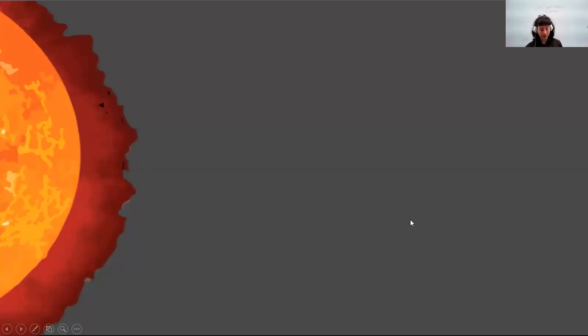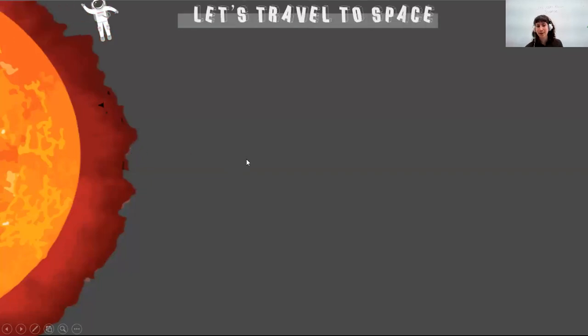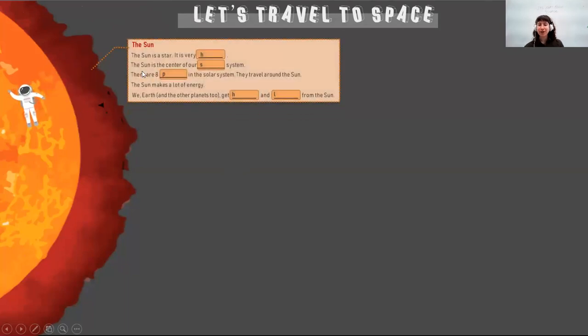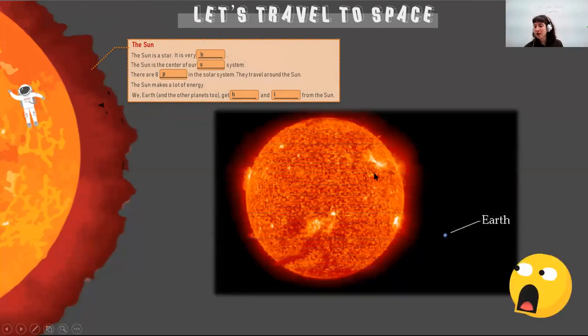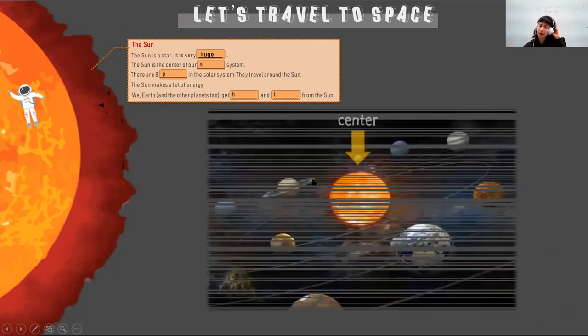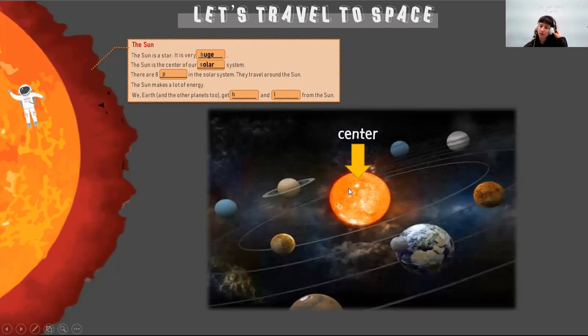We're done with the vocabulary part now, so we can follow along on our book page like this. So this big thing here, do you know what this is? Yeah, it's the sun. We are going to go to the base. So here we are at the sun. The sun is a star we heard before. And is it big or is it small? It's very huge, very big. And the sun is the center of our solar system, it's in the middle of our solar system.